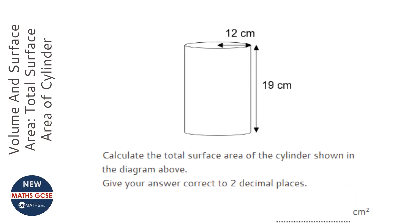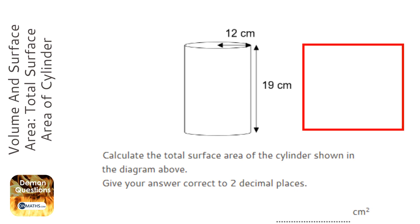The easiest way of doing this question is to draw out a net for the cylinder. So the net is going to be a rectangle with a circle at the top and a circle at the bottom.